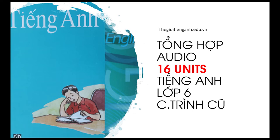Unit 8: Out and About. Page 78. Section A: What are you doing? Listen and repeat. I am playing video games. He's playing video games. I am riding my bike. She is riding her bike. I am driving my car. He is driving his car. We are walking to school. They are walking to school. We are traveling to school by bus. They are traveling to school by bus. We are waiting for a train. They are waiting for a train.